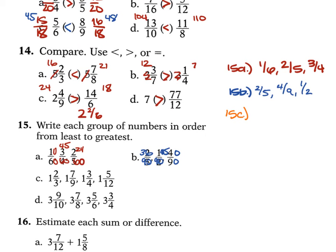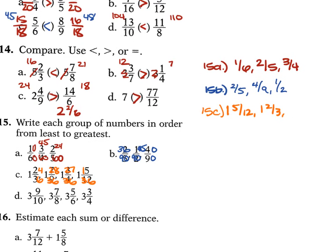For C, we have 1 and 2 thirds, 1 and 7 ninths, 1 and 3 fourths, and 1 and 5 twelfths. Using LCD of 36: 2 thirds becomes 24 over 36, 7 ninths becomes 28 over 36, 3 fourths becomes 27 over 36, and 5 twelfths becomes 15 over 36. So least to greatest: 1 and 5 twelfths, then 1 and 2 thirds, then 1 and 3 fourths.